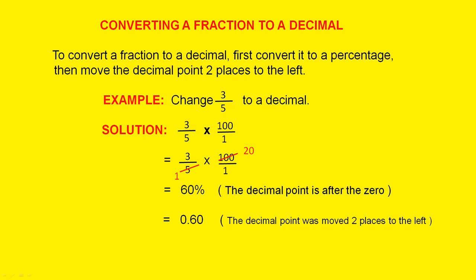Converting a fraction to a decimal. To convert a fraction to a decimal, first convert it to a percentage, then move the decimal point two places to the left.